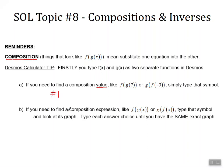Or b, if you need to find a composition expression like f of g of x or g of f of x, we're going to type that symbol and look at its graph. Then we're going to type each answer choice until we have the same exact graph. Let's look at examples one and two.